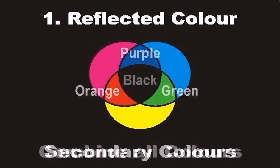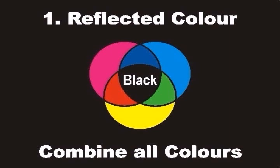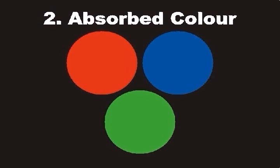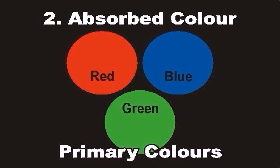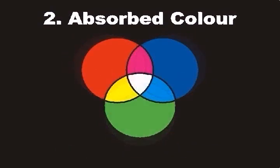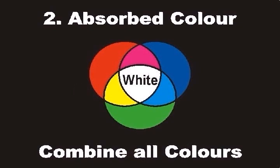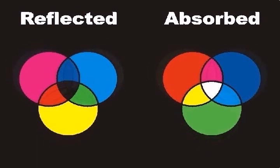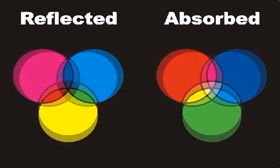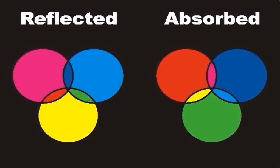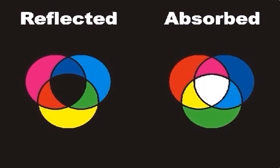With reflected color, all the primary colors can be combined to create black. When considering absorbed color, the three primaries are blue, red, and green. These colors can be combined to create cyan, magenta, and yellow. Therefore, reflected and absorbed color are opposite in nature. Note the complementary or opposite relationship between reflected and absorbed color wheels.